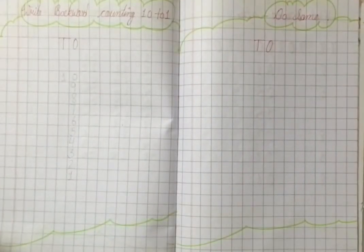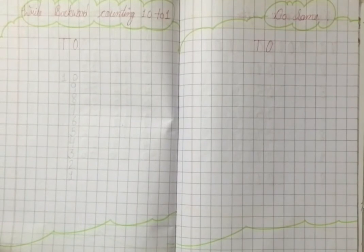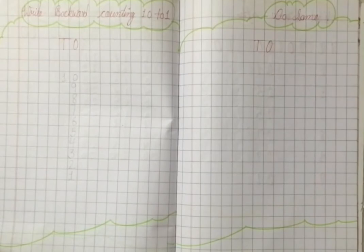Q, R, S. Is right, backward counting 10 to 1. So let's start backward counting. Pichay se start karni hai aapko backward counting.